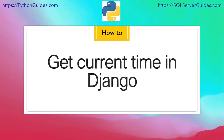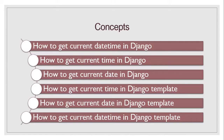Let's see the agenda of this video. First, we are going to understand how we can get the current datetime value in Django — a value which contains both date and time details. After this, we will get only the current time value, then only the current date value, and finally how to generate these current datetime values in Django templates.